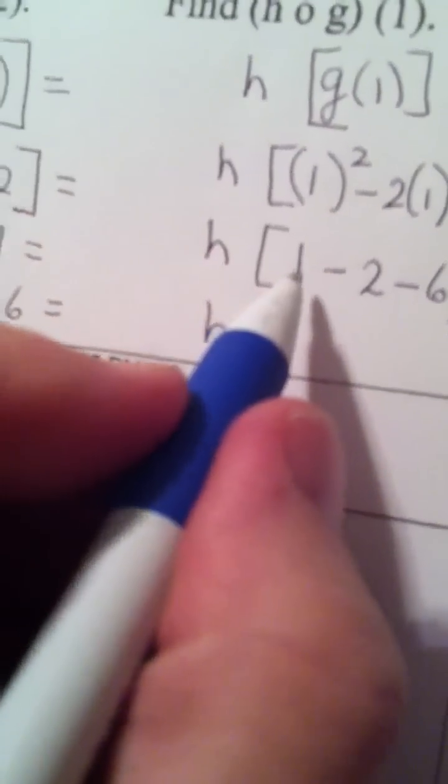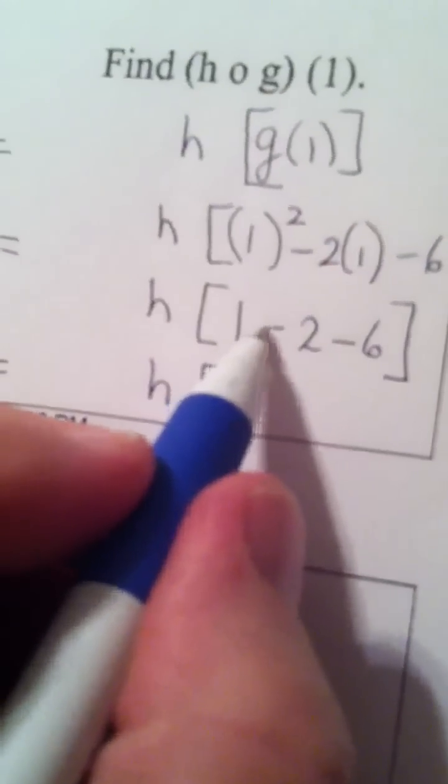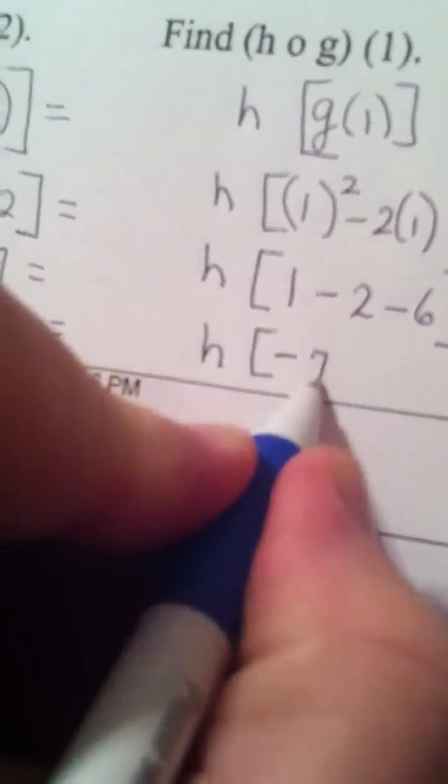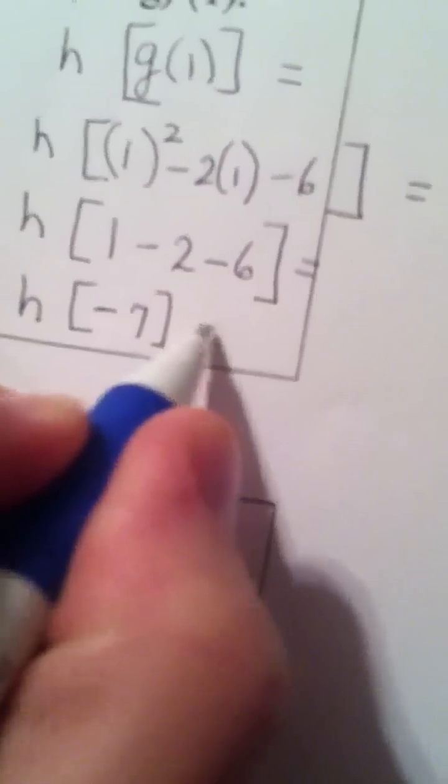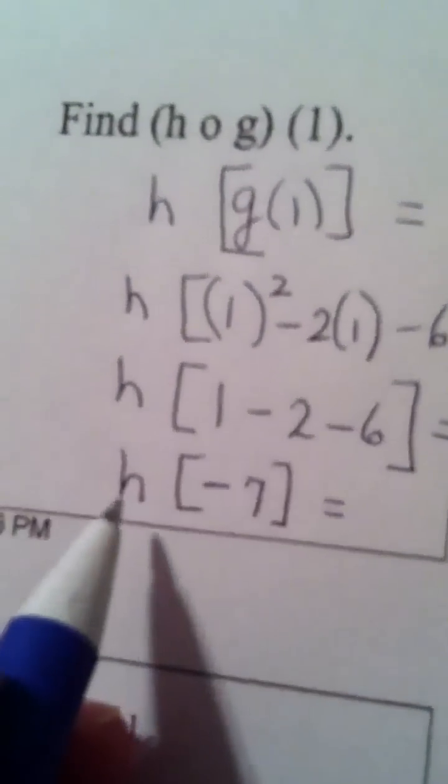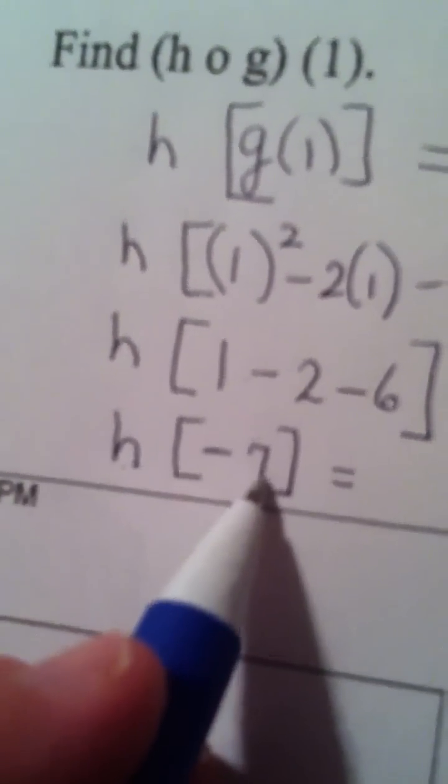And let's see. This is going to give me a negative 7. Now what I do, these are all equal. Now what I do is I finish the problem by going to function h and plugging in a negative 7.